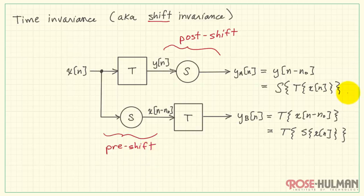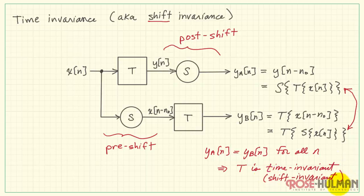The notion of time invariance says that if these two are the same for all values of N, that is for all time, then the system is said to be time invariant, again also called shift invariant. This is a biconditional meaning that if this property holds, then we know that Y sub A and Y sub B are equal for all time.